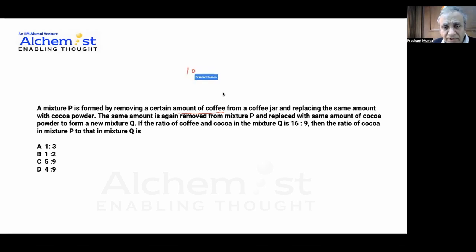So we started with 100% of coffee. After one step, we are left with 100 into f fraction of coffee. And after the next step, we are left with 100 into f squared fraction of coffee.